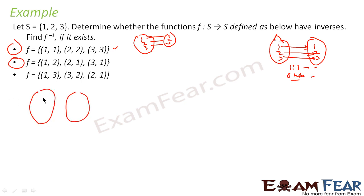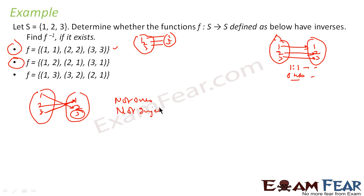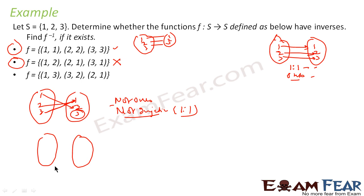Now let's do scenario 2. Here from set {1,2,3} to {1,2,3}: 1→2, 2→1, and 3→1. You can see that element 2 in the codomain is an orphan, so it is not onto. Also, element 1 has two arrows coming in, so it is not one-to-one. Since it is not onto, it is not invertible.